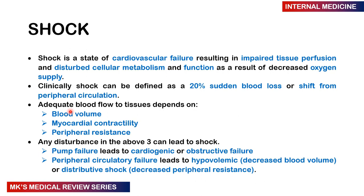For adequate tissue blood flow to actually happen, we need three things working together: the blood volume has to be adequate, myocardial contractility should be adequate, and there should be some peripheral resistance. Any disturbance in any of these three things is going to lead to shock. So if the pump fails, it could be cardiogenic or obstructive shock — which is what we're going to be talking about. If there is peripheral circulatory failure, this leads to hypovolemic shock. This is attributed to decreased blood volume, or distributive shock, which is due to a decrease in peripheral resistance.